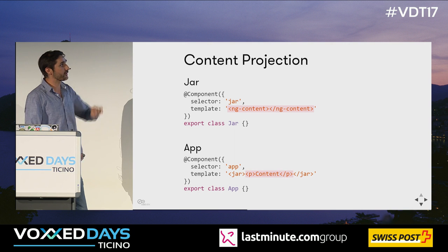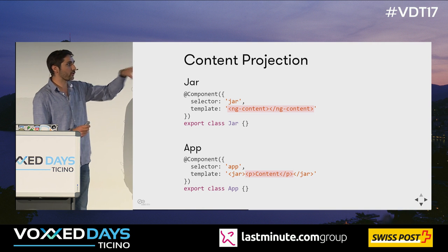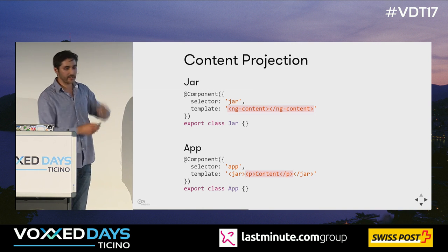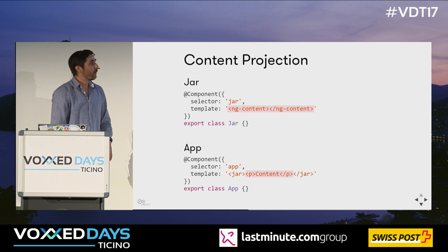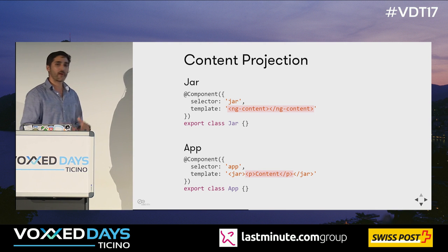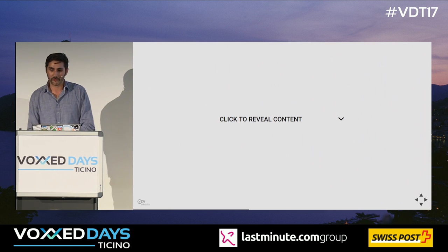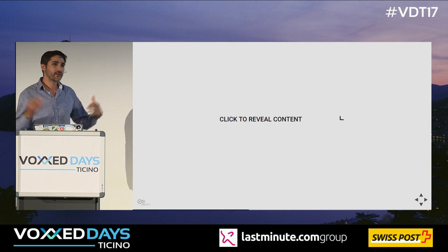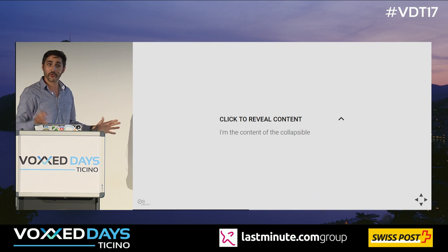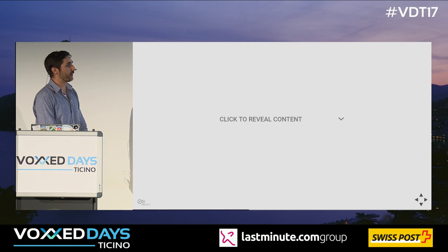Content projection is the place where we want to get stuff from the outside projected into our component. If we have an app using a jar component, between the start and end tags of our jar we can put content, and this content will be projected in. This is a great tool for composition because it makes you very flexible. You can create components like a collapsible — a really simple component that, if done right using extrinsic composition, is highly flexible because you can put whatever you want into it.